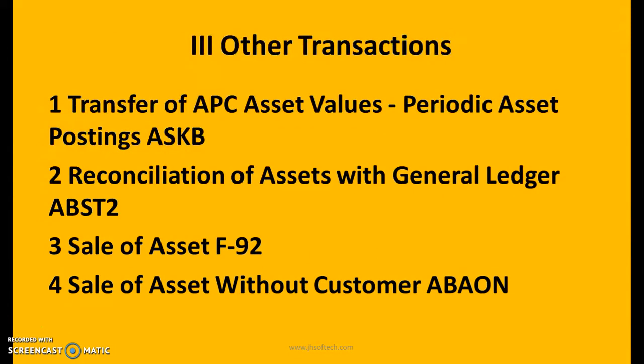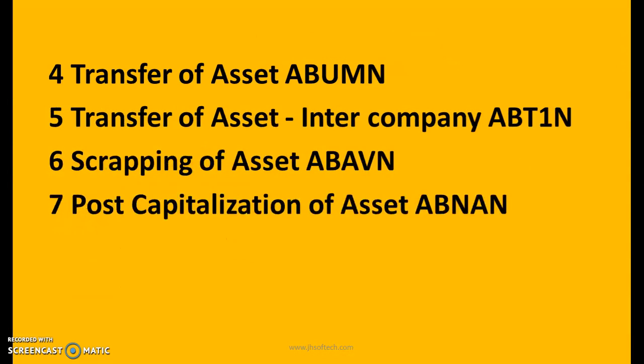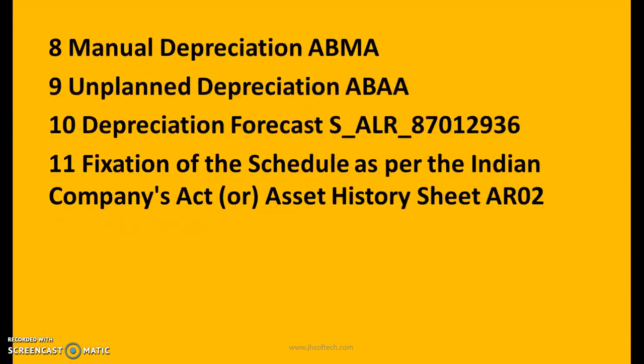Other transactions used for asset accounting: Transfer of APC asset values — periodic asset postings: ASKB. Reconciliation of assets with general ledger: ABST2. Sale of assets: F-92. Sale of assets without customer: ABON. Transfer of assets: ABUMN. Transfer of assets intercompany: ABT1N. Scrapping of assets: ABAVN. Post capitalization of assets: ABNAN. Manual depreciation: ABMA. Unplanned depreciation: ABAA. Depreciation forecast: S_ALR_87012936.